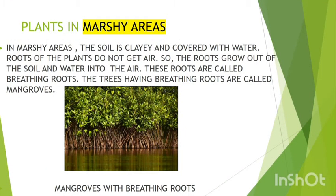Plants in marshy areas. In marshy areas the soil is clay and covered with water. Roots of the plants do not get air, so the roots grow out of the soil and water into the air. These roots are called breathing roots. The trees that have breathing roots are called mangroves.